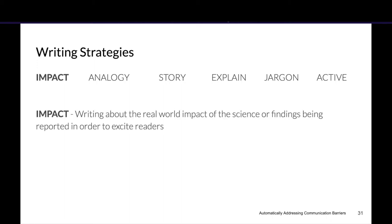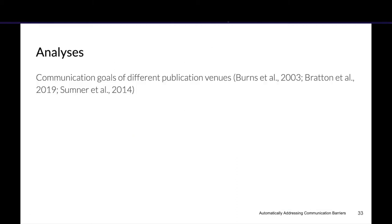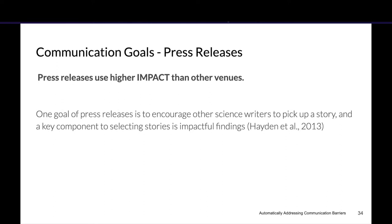Impact is writing about the real-world impact of the science or findings being reported in order to excite readers. Because our goal was to see evidence of these strategies in real-world science communication, we collected science news articles from the internet archive, annotated a subset of this corpus with our strategies, and then trained classifiers to automatically identify if sentences were using a particular strategy. Given these strategy classifiers and dataset, I'll go over one analysis based on our expectations about press releases.